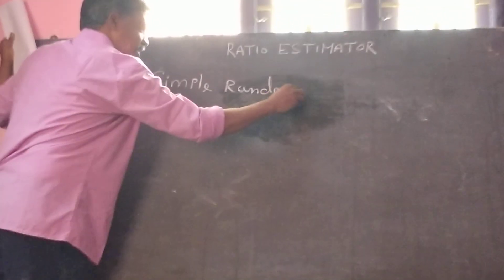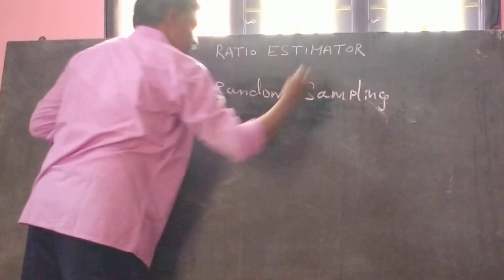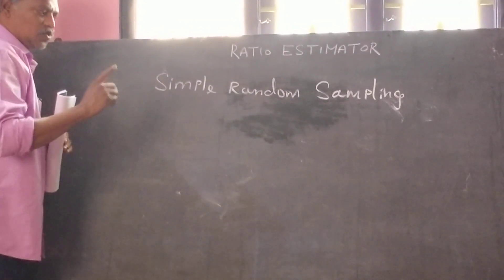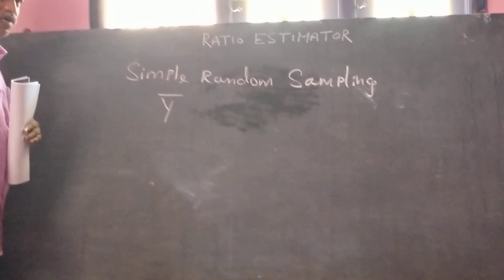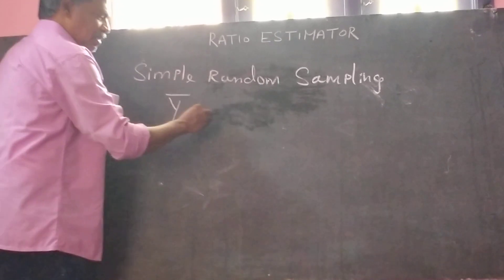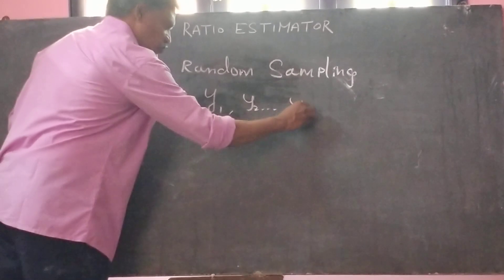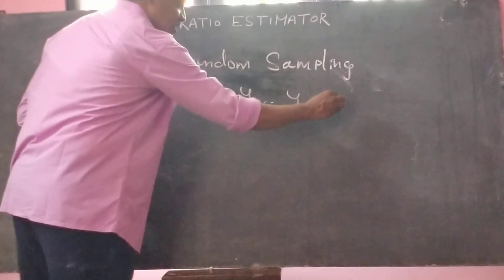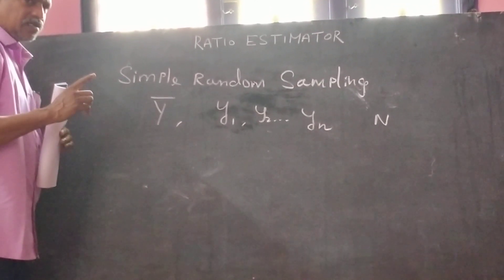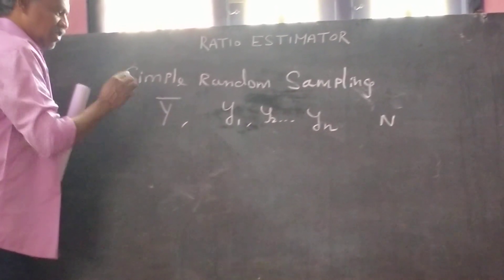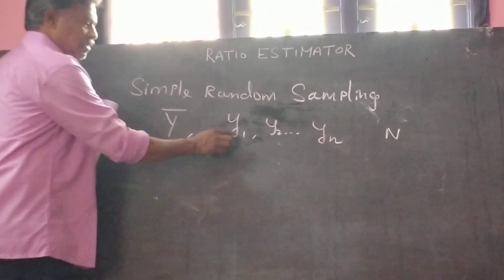In the simple random sampling, suppose we need to estimate the population parameter y bar, that is the population mean. We must take the sample observations y1, y2, etc., yn from the population of size N. So based on the sample observations, we must estimate the population mean y bar. Here we consider only a single variable y.